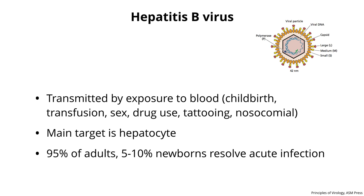Moving on to some more pathogenic persistent viruses — Hepatitis B virus. Remember the genome of hepatitis B virus: it's gapped, double-stranded, all has to be repaired before it goes into the cell, and it has a reverse transcriptase as part of its life cycle. These are transmitted by exposure to blood. The virus has a viremic phase with very high titers in the blood. It can be transmitted at childbirth from mother to child, by transfusions, sexually, by drug use, and tattooing is a big one. Tattooing is a great way to get hepatitis because they don't sterilize the needles well enough.